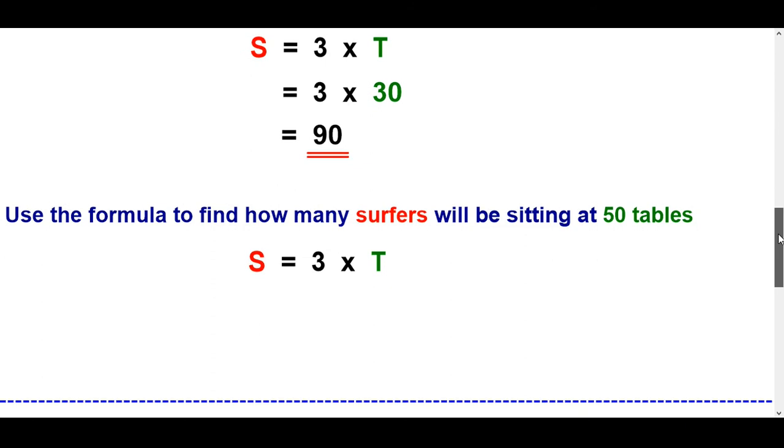Here's another question like that. Use the formula to find out how many surfers will be sitting at 50 tables. Well we know T is 50 this time. So 3 times 50 that's 150 isn't it? Dead easy. Without drawing any diagrams doing anything like that we came to our conclusion.